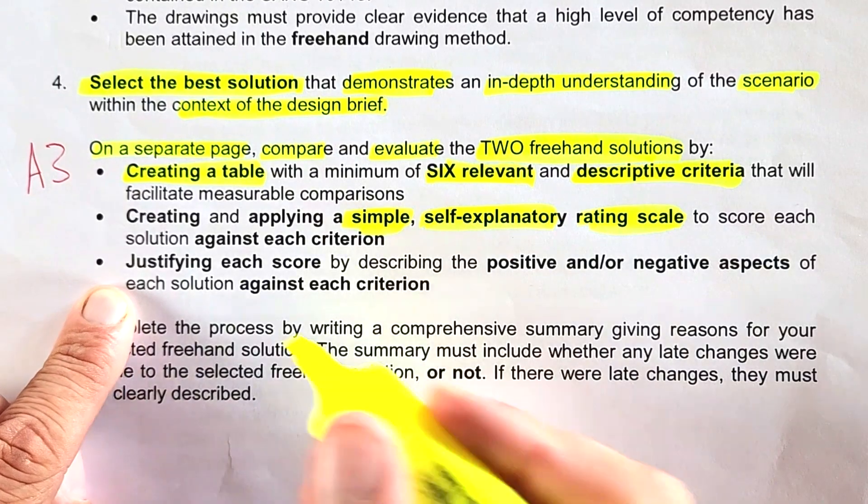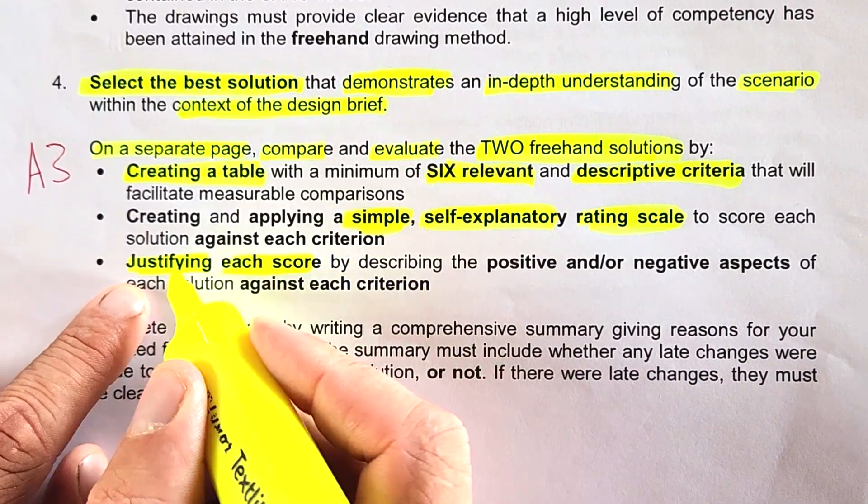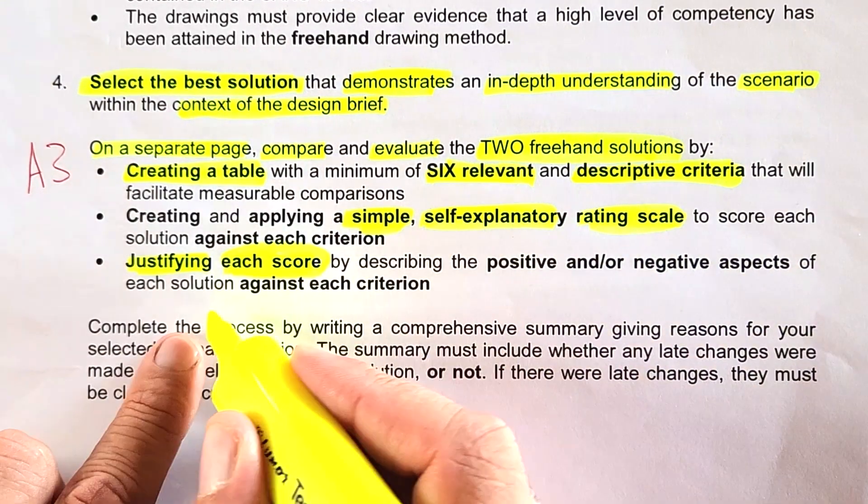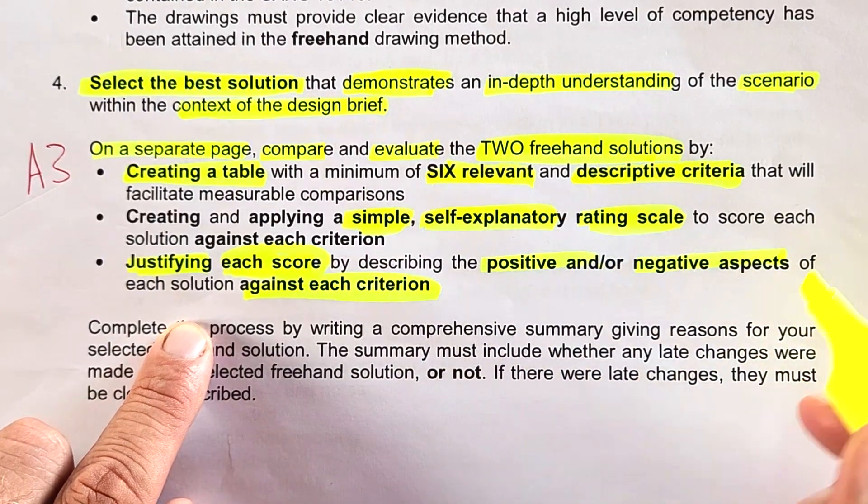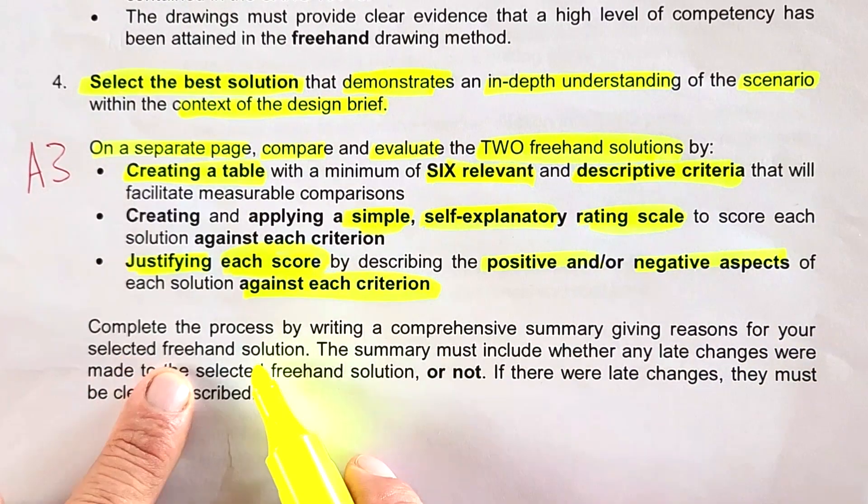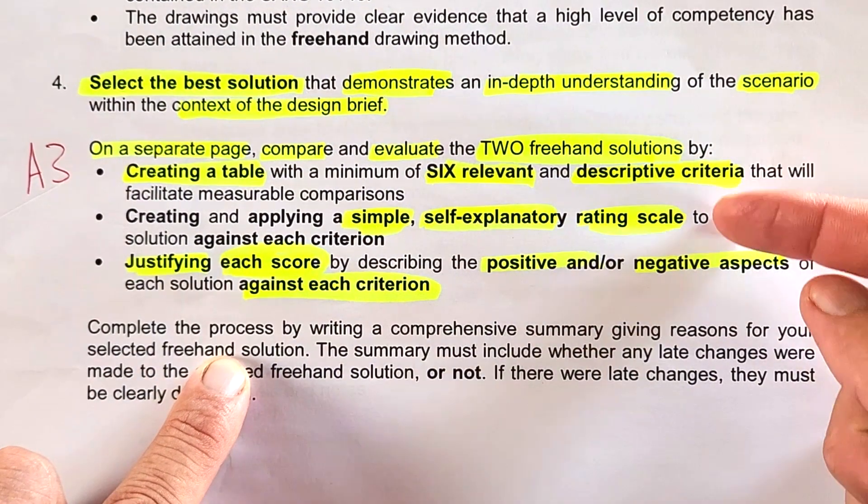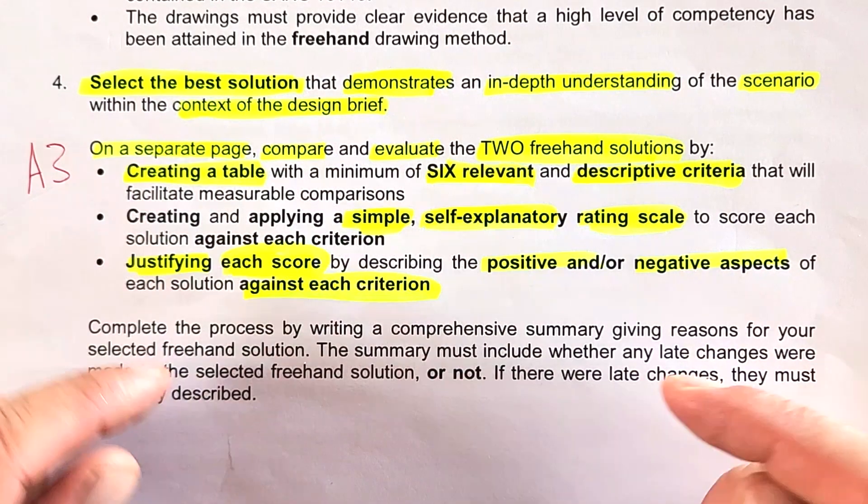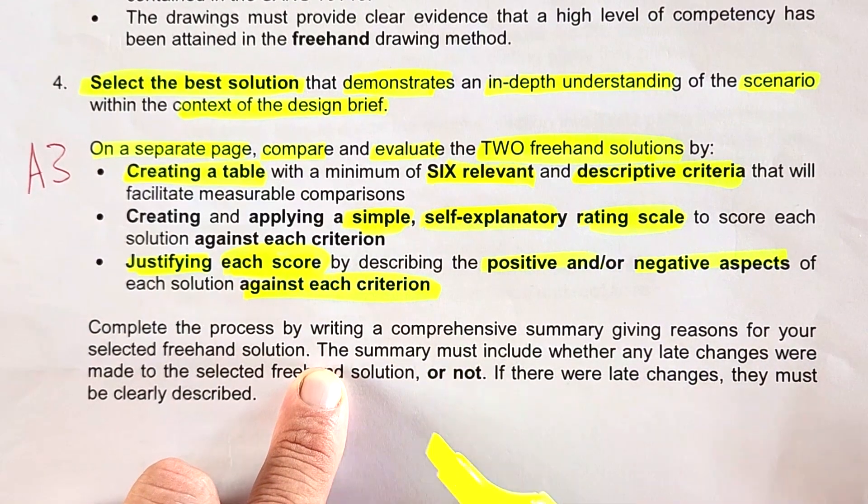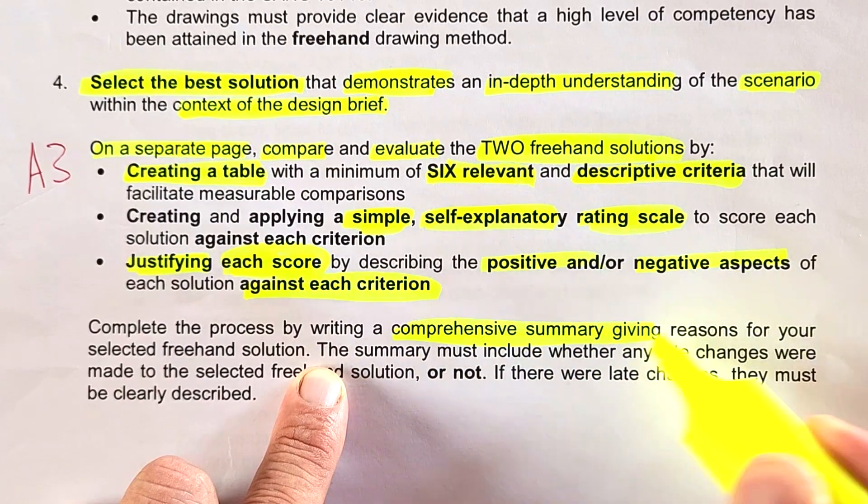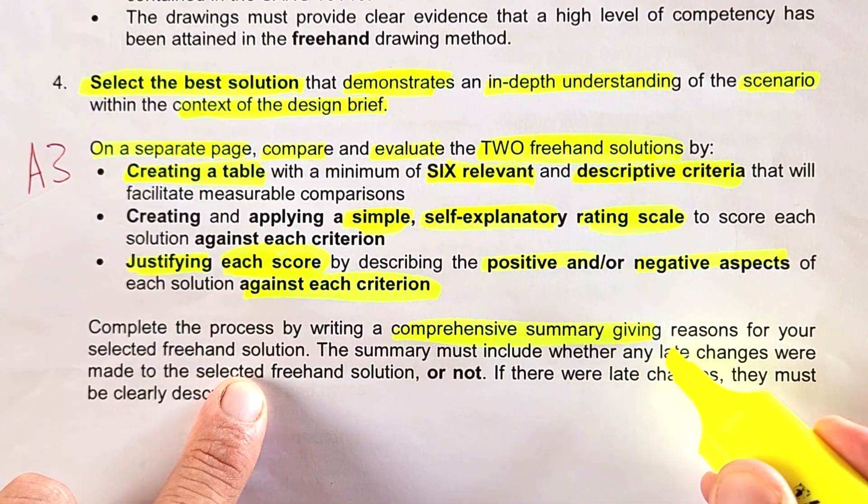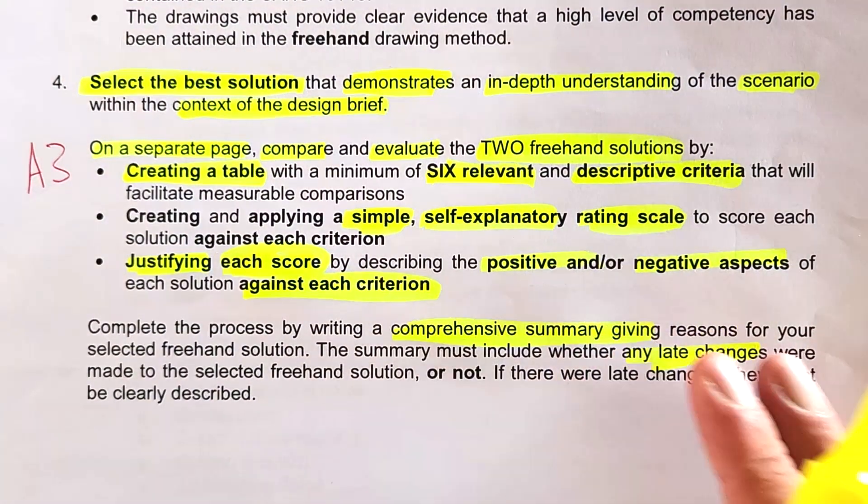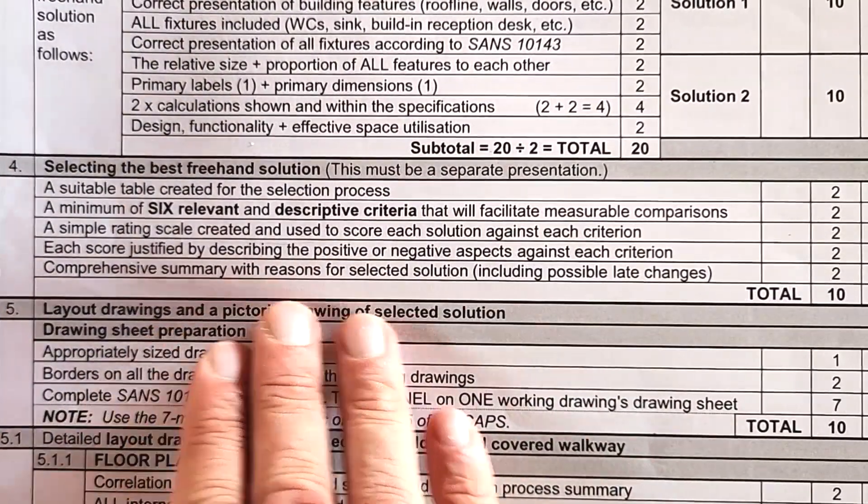You have to further justify each of these scores. You need a positive and negative motivation why you scored each one as you did, describing the positive or negative aspects of each solution against each other. Complete the process by writing a comprehensive summary giving reasons for your selected solution. Once you have your six criteria, you'll come up with a total that will indicate which concept scored highest. Based on that, you'll select your final solution. That summary must include if you had any late changes that were made or not made.